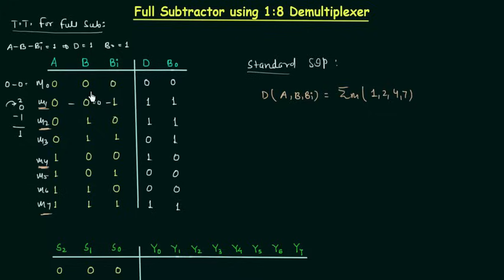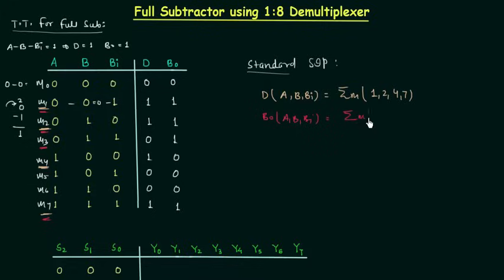For the borrow output, it is high for m1, m2, m3, and m7. So the expression is the summation of minterms: 1, 2, 3, 7. This is what we have from the truth table.